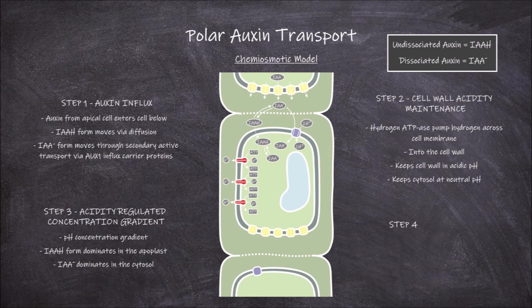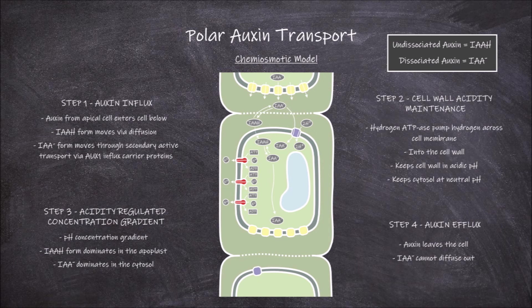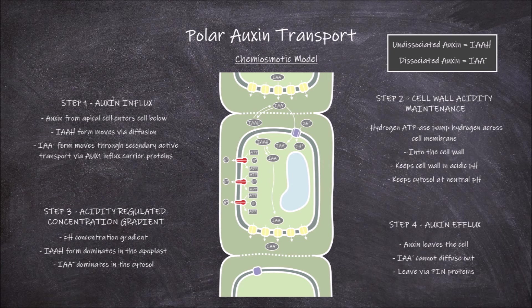The next and final step in polar auxin transport is auxin efflux. During this step, auxin leaves the cell in the dissociated form. The dissociated form of auxin is not able to diffuse across the cell membrane, so it accumulates in the cytosol. It requires specialized membrane proteins to leave the cell. Auxin leaves via PIN proteins located in larger numbers on the basal end of the cell, which act as auxin efflux carriers.